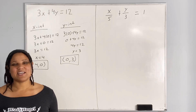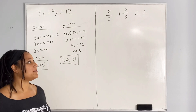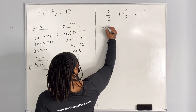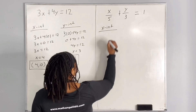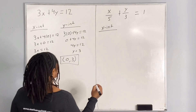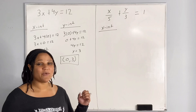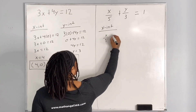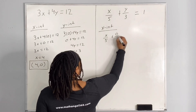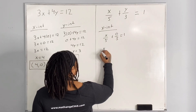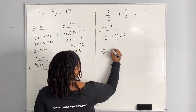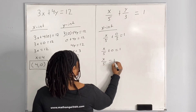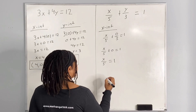Now let's find the x and y-intercept of the second problem. We are going to replace y with 0 and solve for x. So we have x over 5 plus 0 over 3 is equal to 1, which means we have x over 5 plus 0 is equal to 1, which means we have x over 5 is equal to 1. And if we multiply both sides by 5,